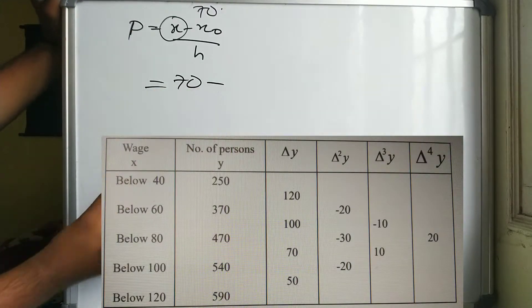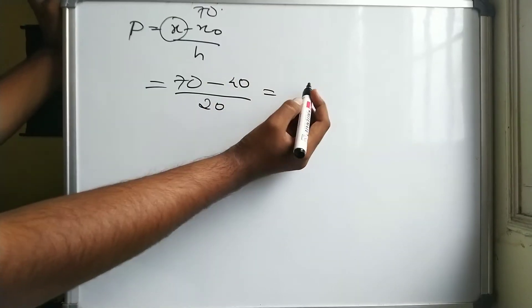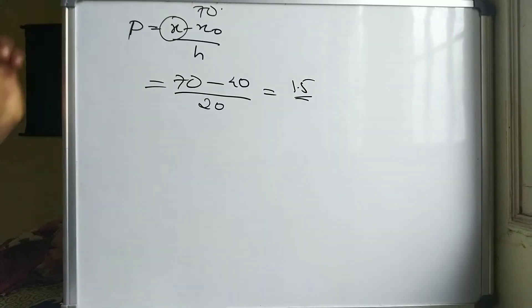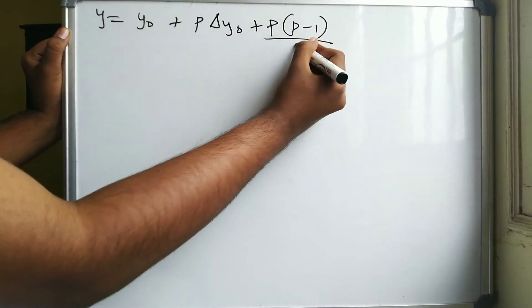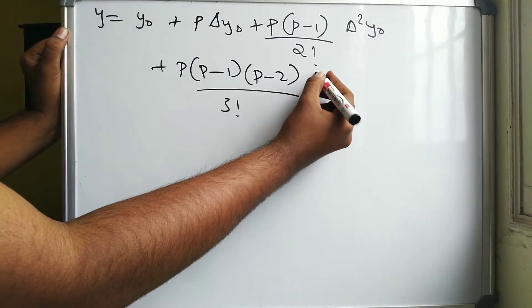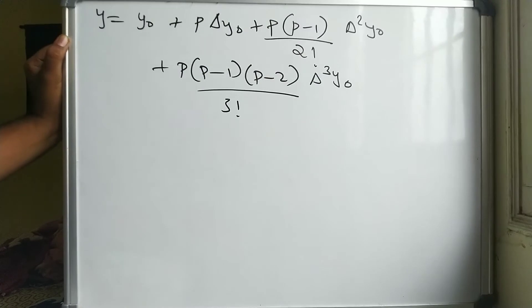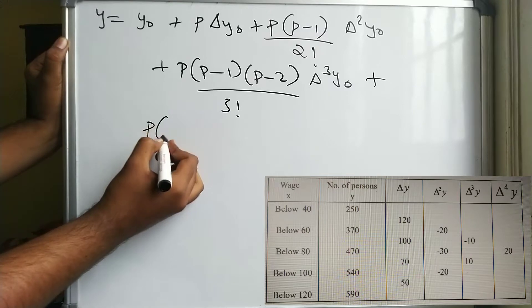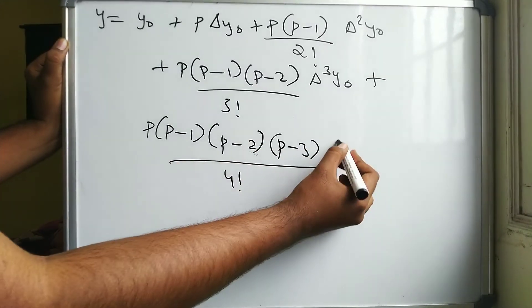p = (70 - x₀) / h = (70 - 40) / 20 = 30 / 20 = 1.5. Now substituting into Newton's forward interpolation formula: y = y₀ + p·Δy₀ + p(p-1)/2! · Δ²y₀ + p(p-1)(p-2)/3! · Δ³y₀ + p(p-1)(p-2)(p-3)/4! · Δ⁴y₀.